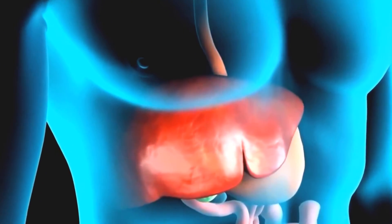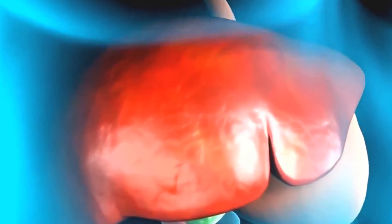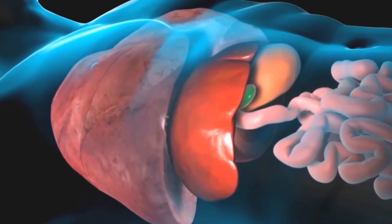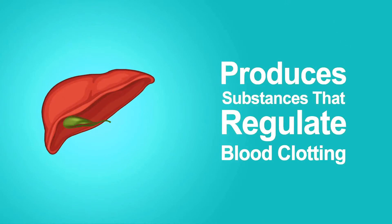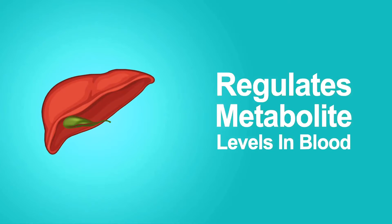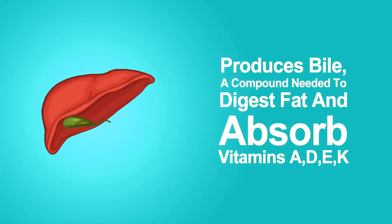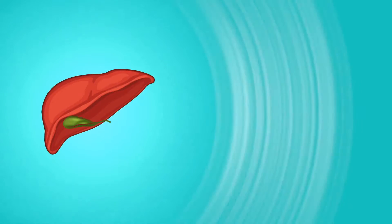The liver is the largest internal organ and the largest gland in our body. There are many ways of looking at how important the liver is. One is to look at how many hours you can survive if the liver stops working — less than 24 hours. The acid builds up and you die of acidosis and metabolic failure.